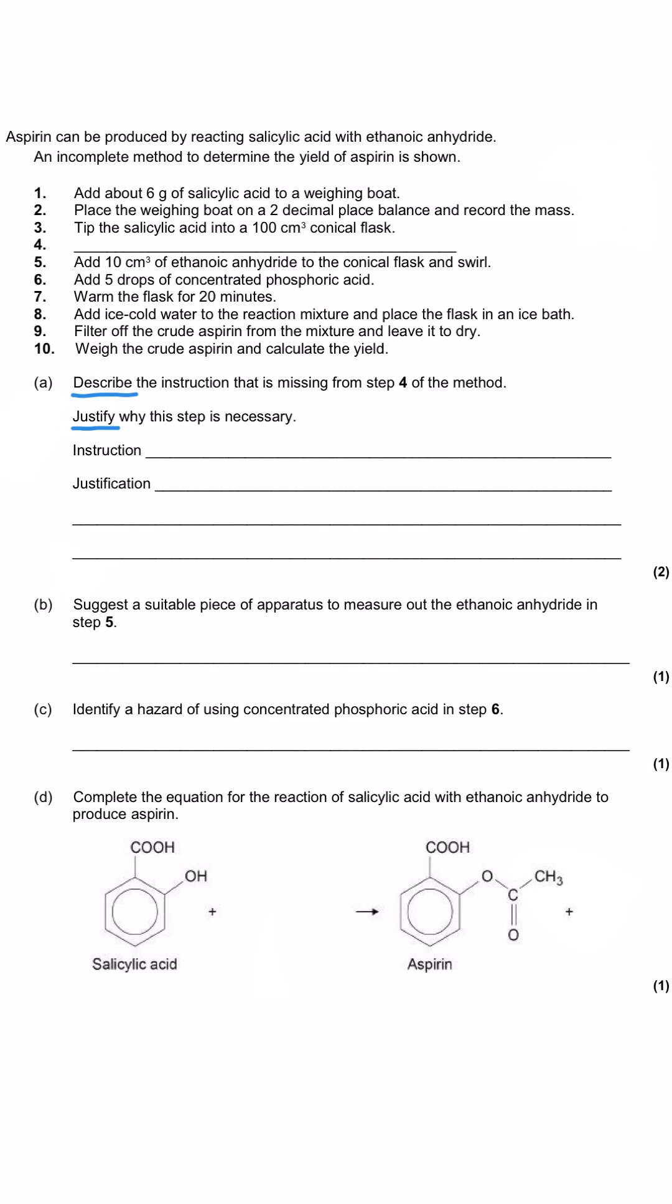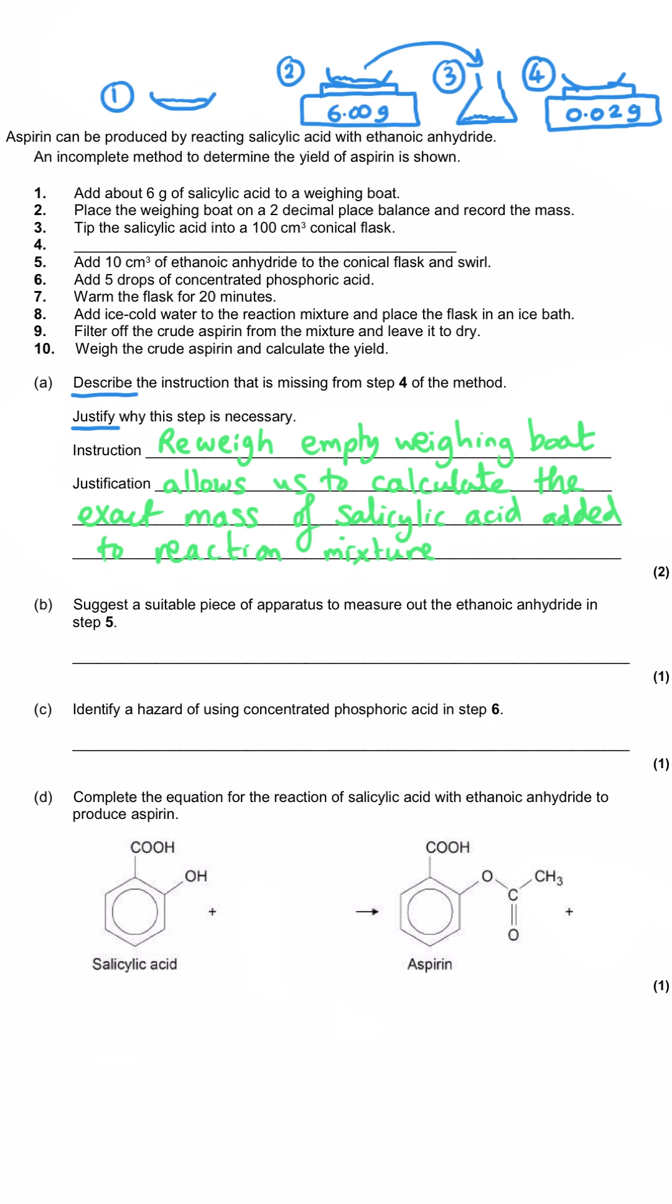That's going to be one mark for each of those key points. The first thing that's happened is we've added 6 grams of salicylic acid to a weighing boat and then we've placed it on the 2 decimal point balance to record the mass, and then we tip the salicylic acid into a conical flask and then what do we do? As you can see from my picture, we think we've added 6 grams of salicylic acid to this conical flask but we might be wrong. What we have to do is we have to re-weigh that empty weighing boat to find out if it really is empty.